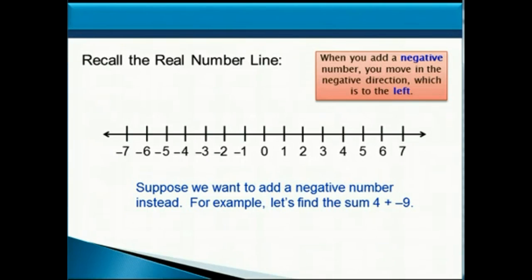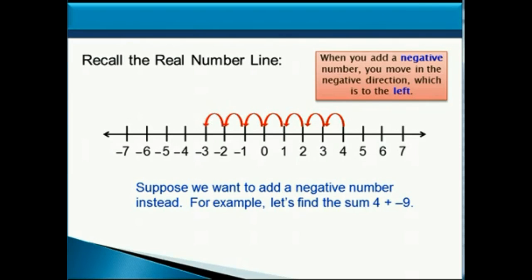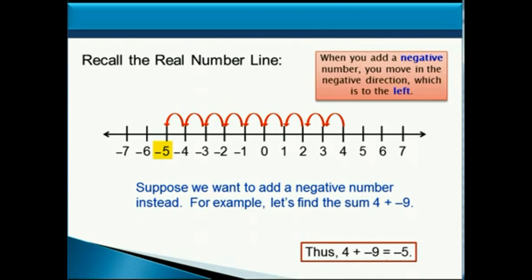So when you add a negative number, you move in the negative direction, which is to the left. So we're going to start at 4, and we're going to move 9 units to the left, and we end up at negative 5. Thus, 4 plus negative 9 is equal to negative 5.